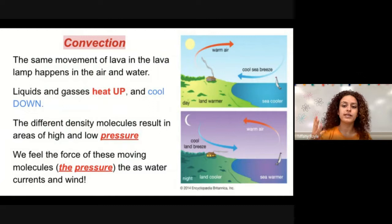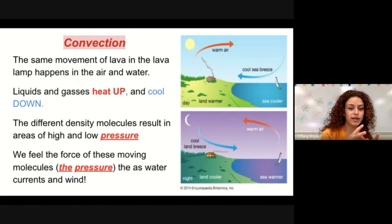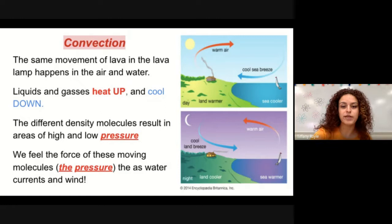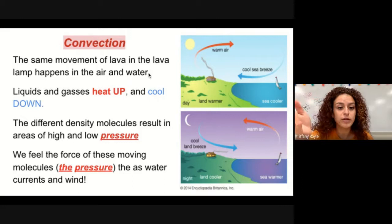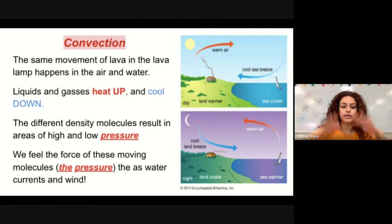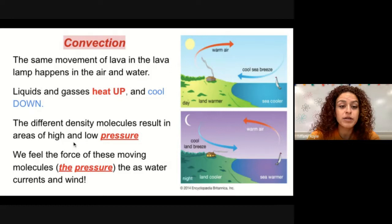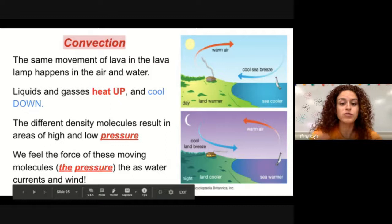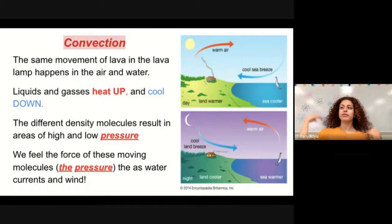So let's kind of sum up what we've learned so far. Convection is the heating up of something by fluids. And air is a fluid. So when the sun heats up the air, that causes convection to start occurring because then that fluid air tries to heat up more air around it, beginning the movement process that we just learned about. So as we saw in the lava lamp, the same movement of lava happens in the air and water. We just talked about how air can move due to convection. So the liquids and gases heat up and then they cool down. As they heat up, as we said, they rise. And as they cool down, they decrease in height. The different density molecules result in areas of high pressure and low pressure. And we feel the force of these moving molecules as they're moving from areas of high to low pressure as wind. That's what wind is. It's air from high pressure trying to move to low pressure.